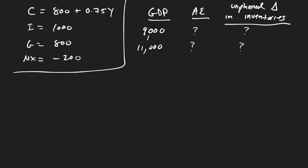What if you're given some equations of consumption, investment, government purchases, net exports, and then you're given the level of GDP and need to figure out aggregate expenditures and the unplanned change in inventories?